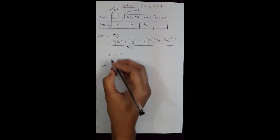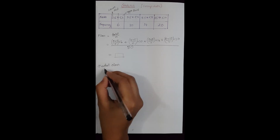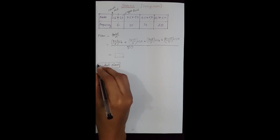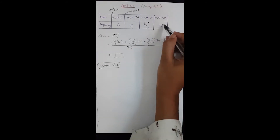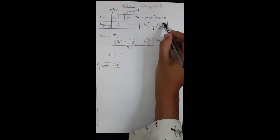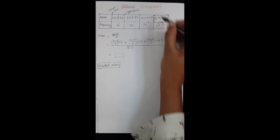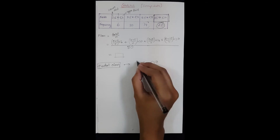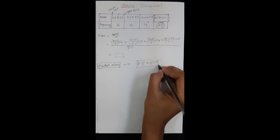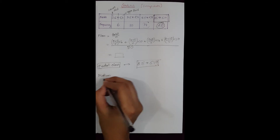In grouped data, the mode is called the modal class because we cannot find an exact value. We look for the highest frequency, which is 20, so 8 to 10 is the modal class — the highest number of students are in this class. The next thing to find is the median.